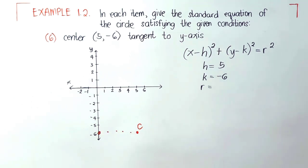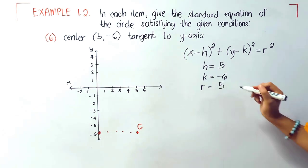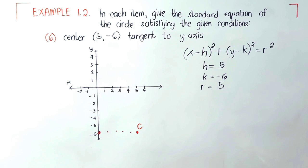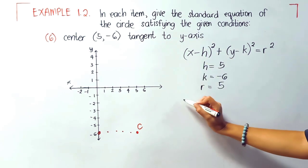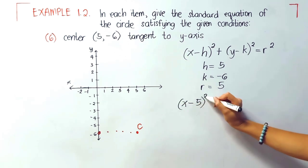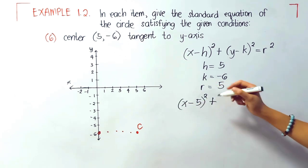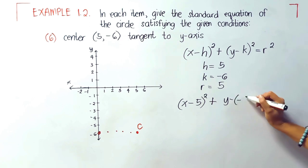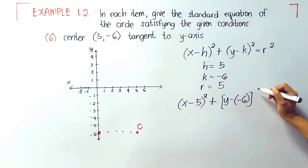You can now substitute the values: x minus our h is 5 quantity squared, plus y minus our k is negative 6 quantity squared, equals 5 squared.